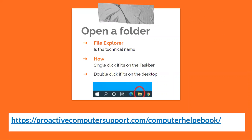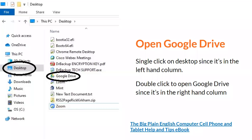Start by opening a folder — that's called File Explorer. You single-click on it on the taskbar or double-click on it if it's on the desktop. Once you've opened it, left-mouse click on Desktop — just a single left-mouse click because it's on the left-hand side of the column. Then double-click on Google Drive, because that's in the right-hand side of the column.